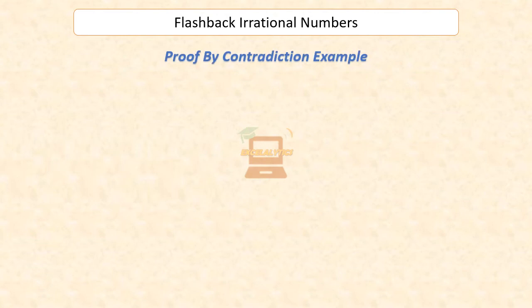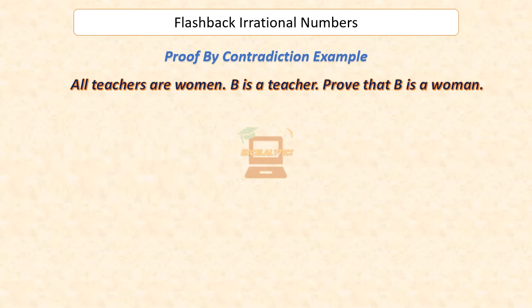Suppose we are given the following: all teachers are women; B is a teacher; prove that B is a woman. Even though this is a very easy to understand example, let us see how we can prove this by contradiction. Here, we have to establish the truth of the statement s: B is a woman.